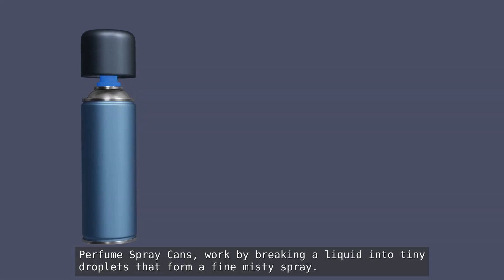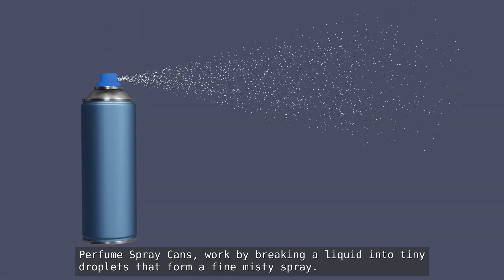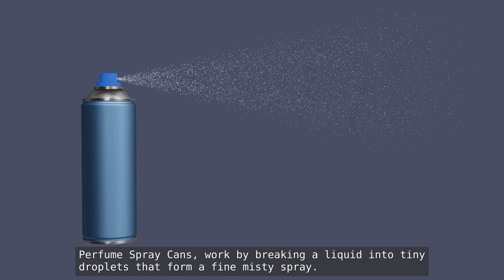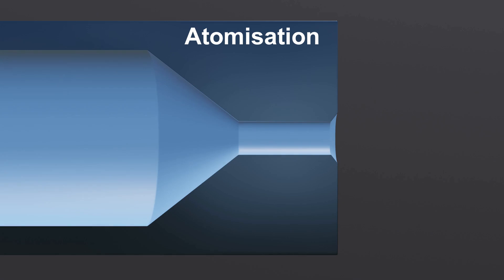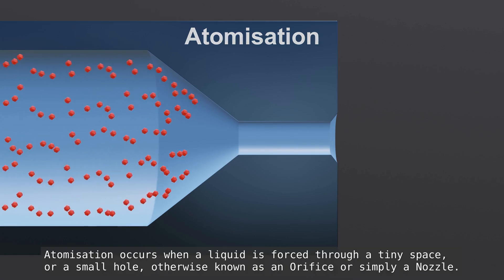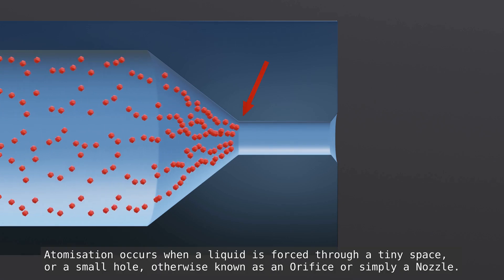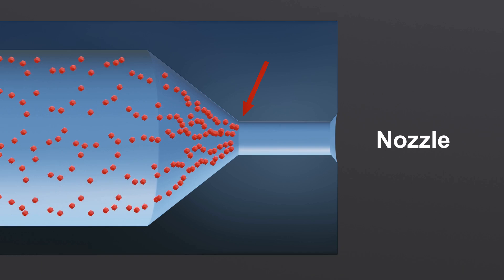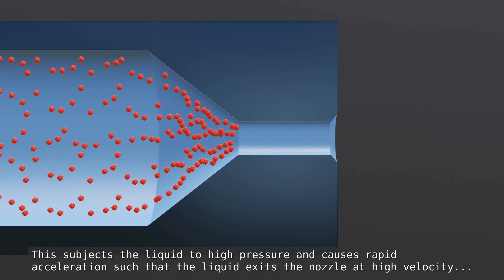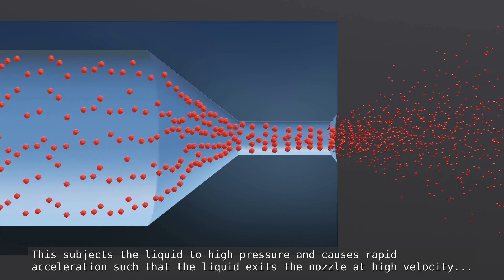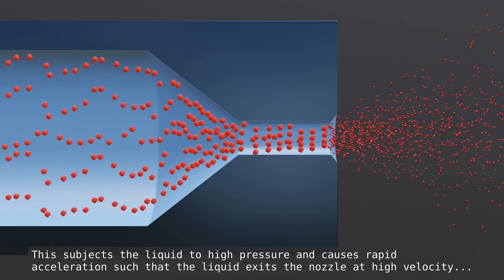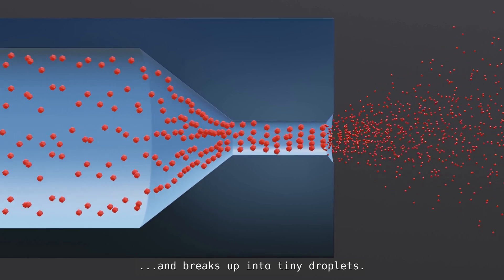Perfume spray cans work by breaking a liquid into tiny droplets that form a fine misty spray. This process is called atomization. Atomization occurs when a liquid is forced through a tiny space or a small hole, otherwise known as an orifice, or simply a nozzle. This subjects the liquid to high pressure and causes rapid acceleration such that the liquid exits the nozzle at high velocity and breaks up into tiny droplets.